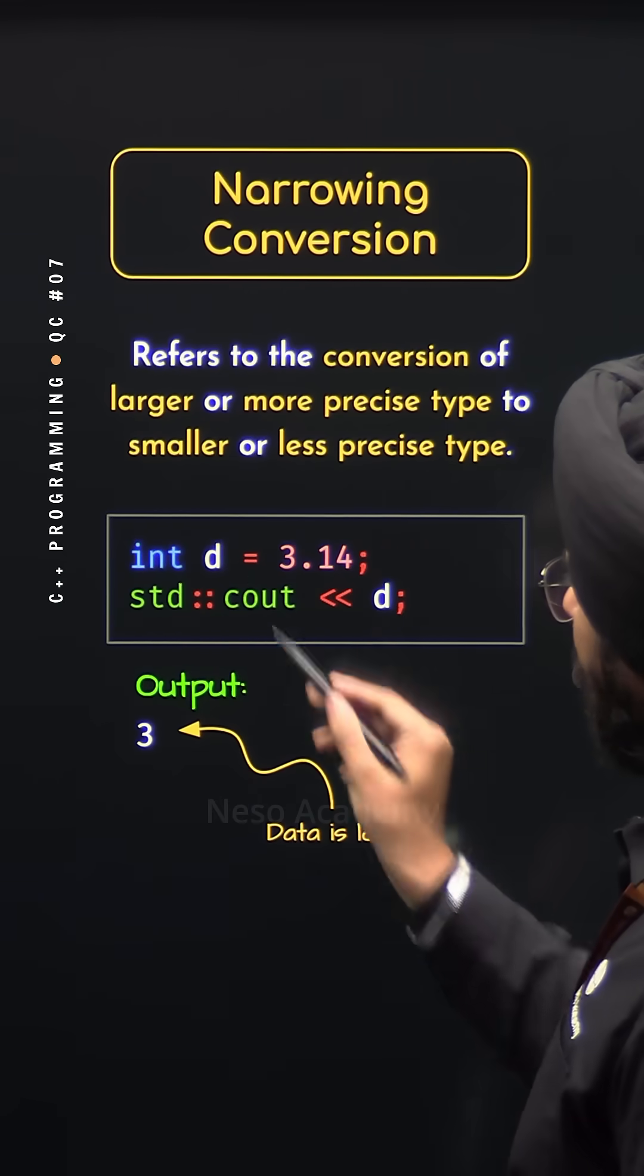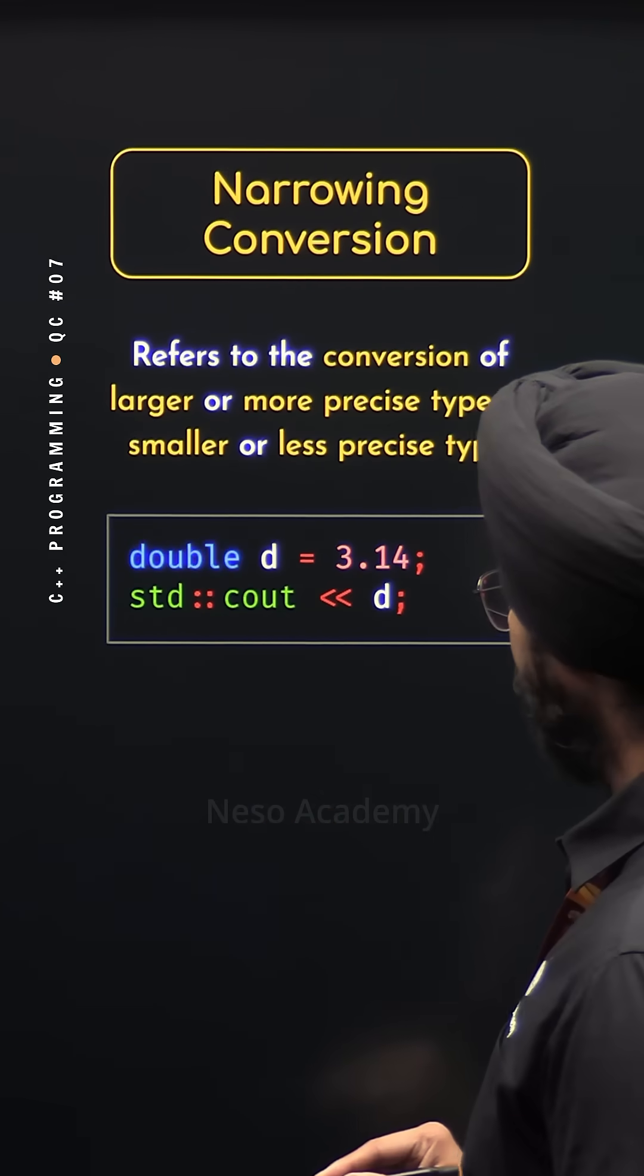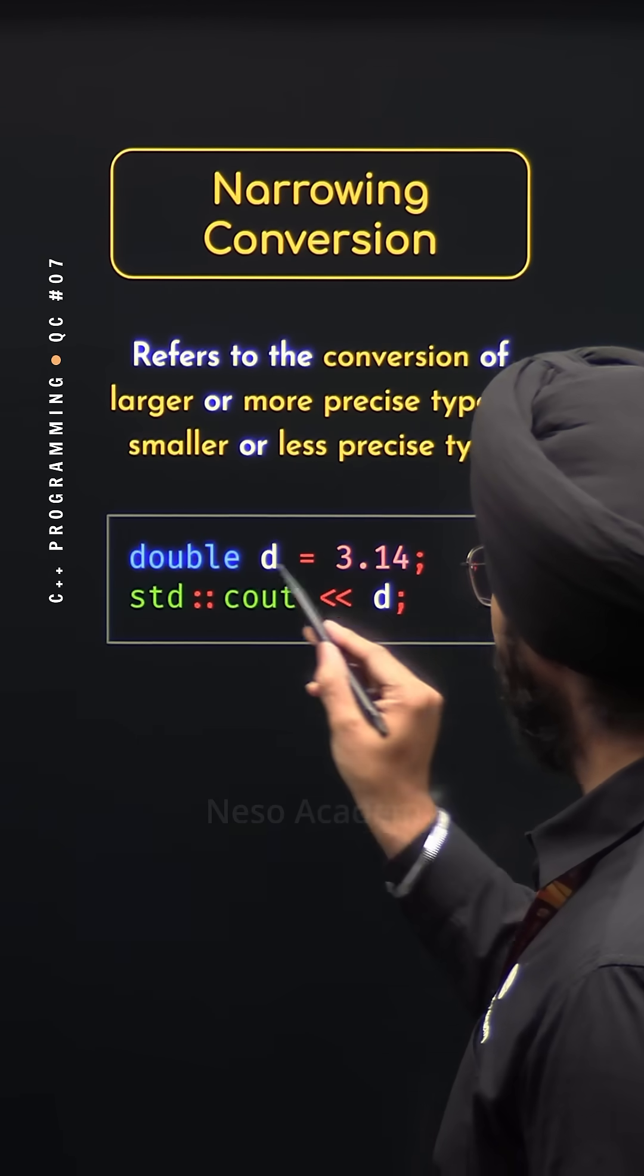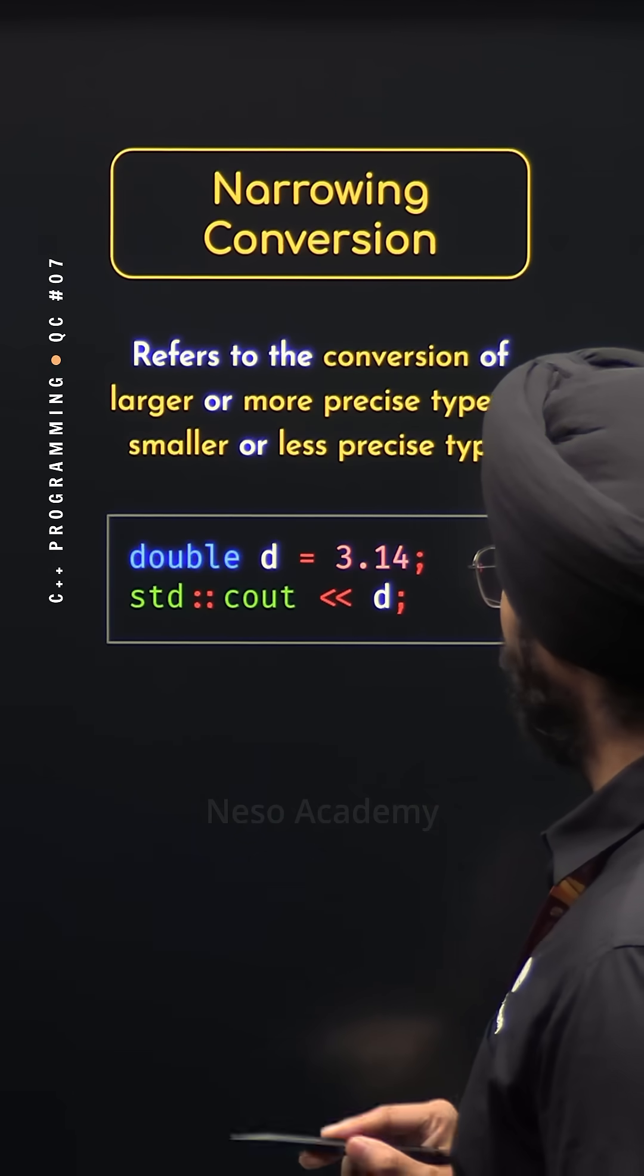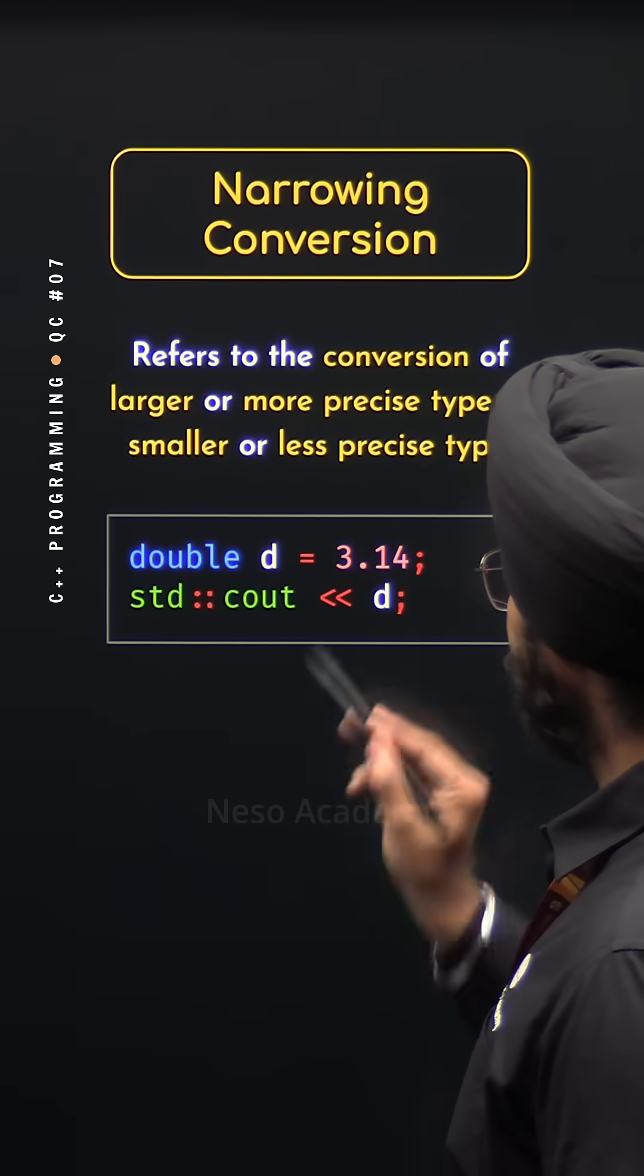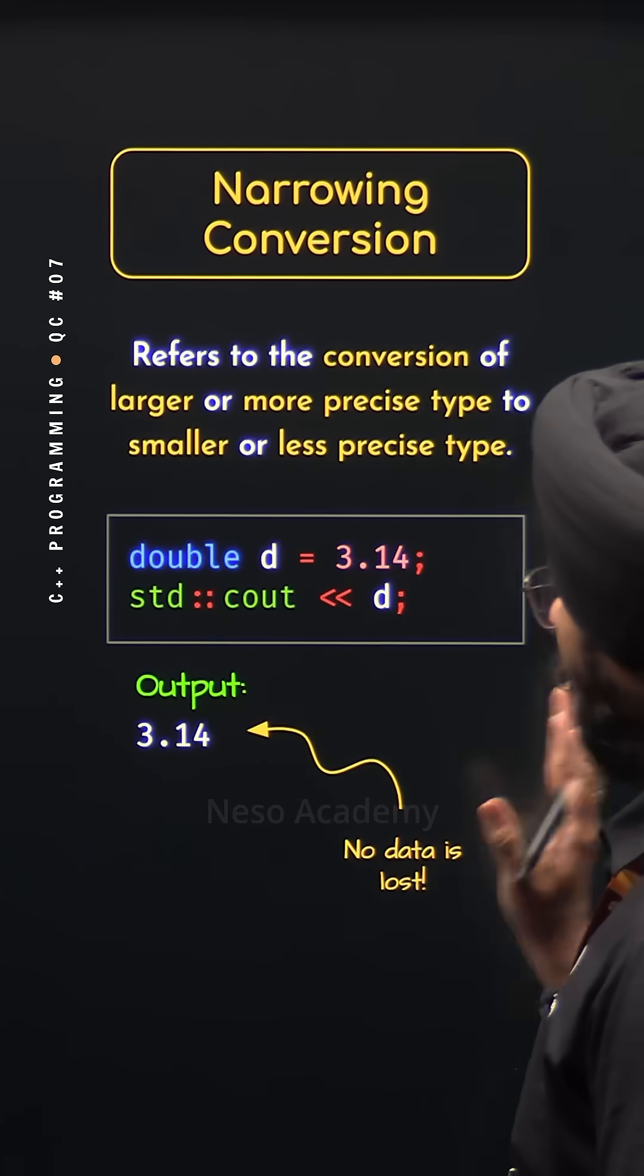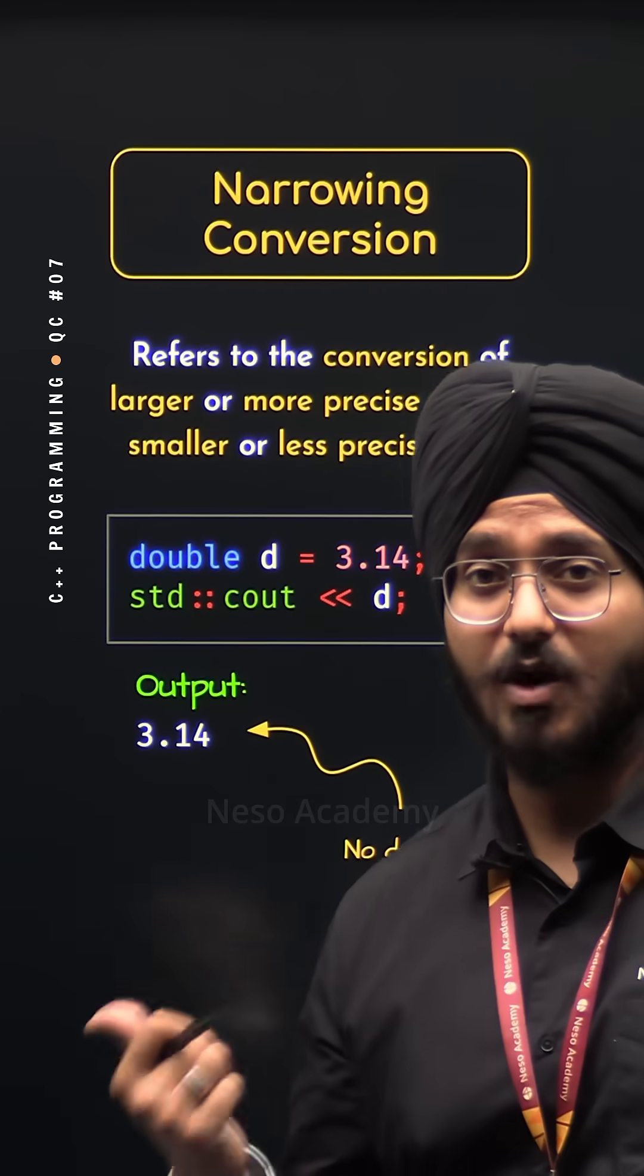Now what happens if we replace int by double? There is no narrowing conversion in this case because the type of this variable is matching with the type of this value. So when we try to display this value, we will get 3.14. Therefore, this means there is no data loss because there is no narrowing conversion.